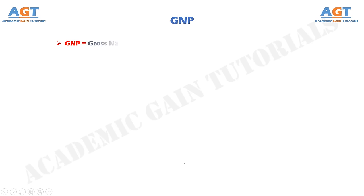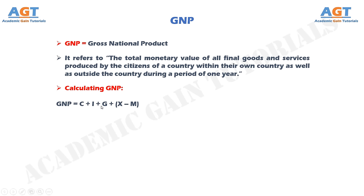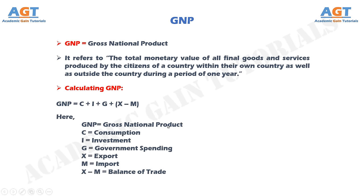GNP: the term GNP is the abbreviated form of gross national product. It refers to the total monetary value of all final goods and services produced by the citizens of a country within their own country as well as outside the country during a period of one year. The simple formula used for calculating GNP is: GNP = C + I + G + (X − M), where GNP represents gross national product, C represents consumption, I represents investment, G represents government spending, X represents export, M represents import, and the difference between X and M equals the balance of trade.